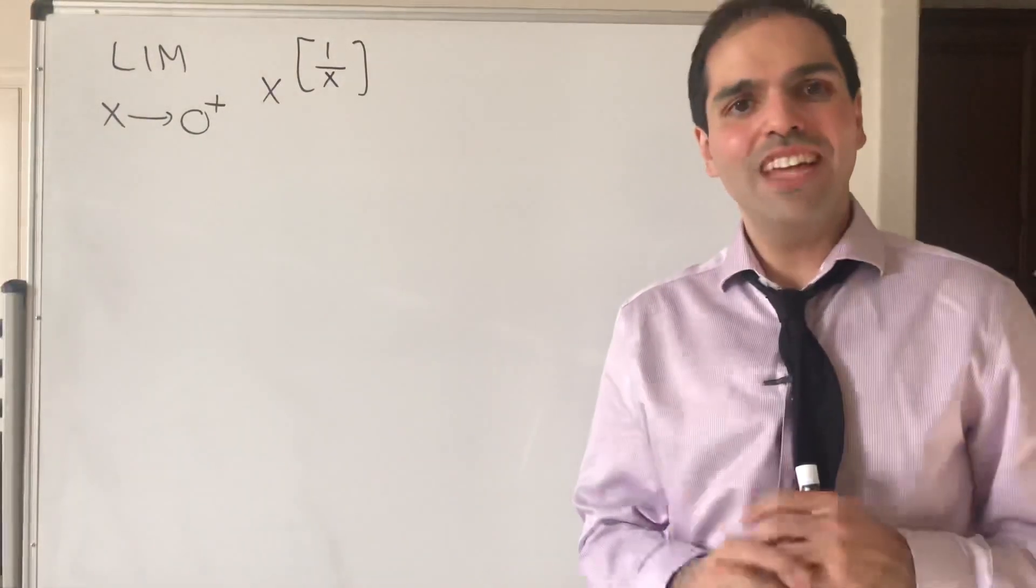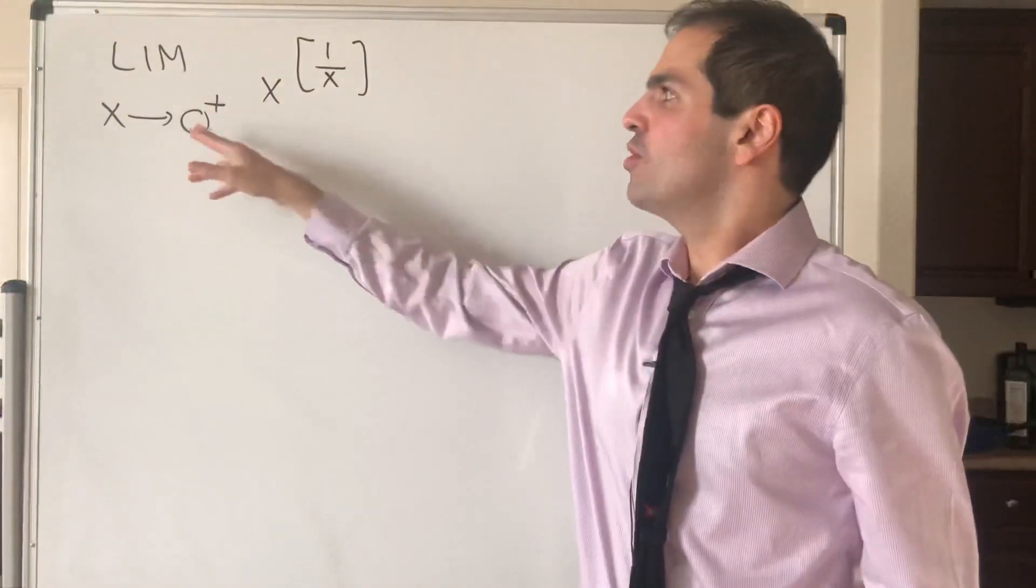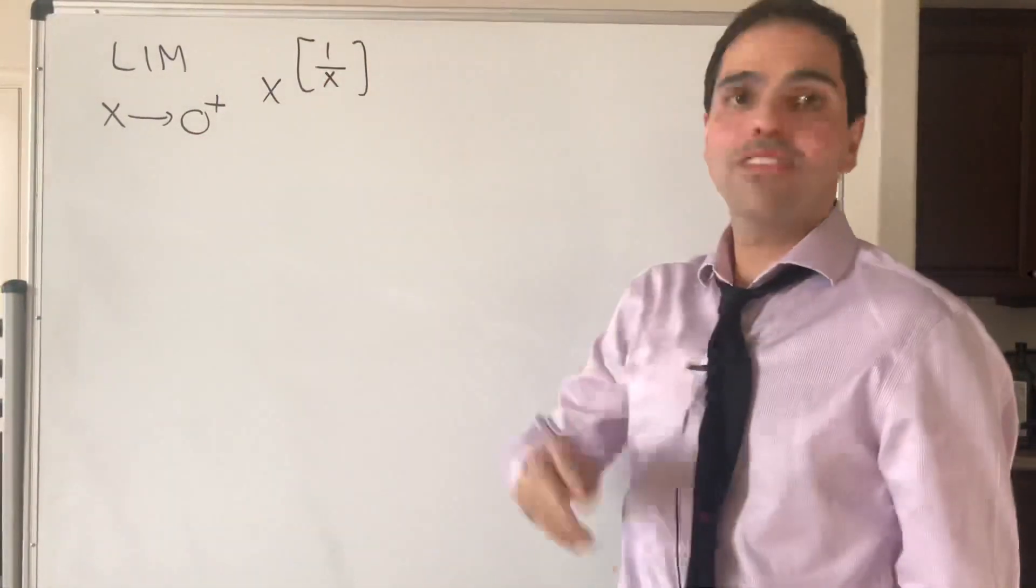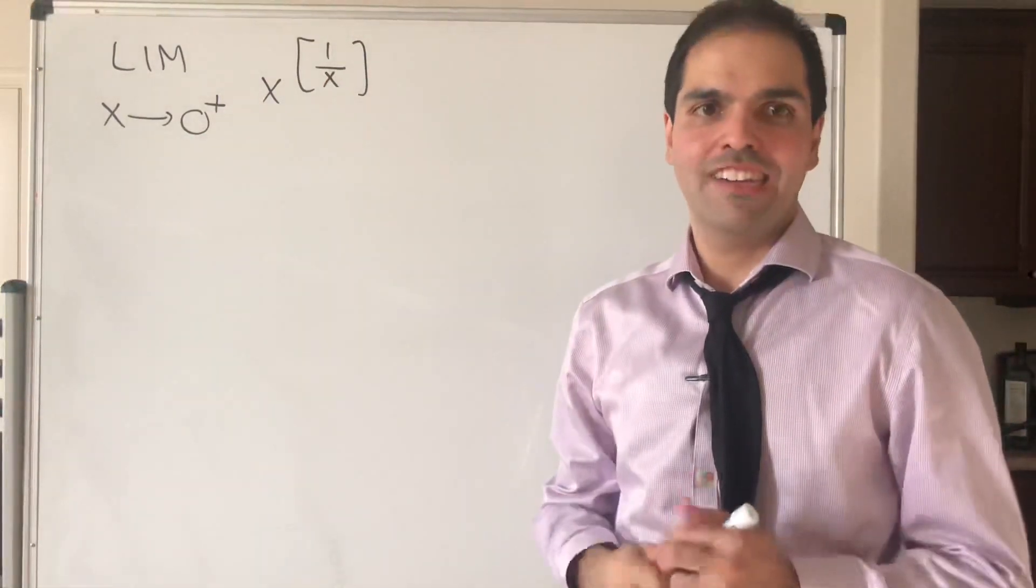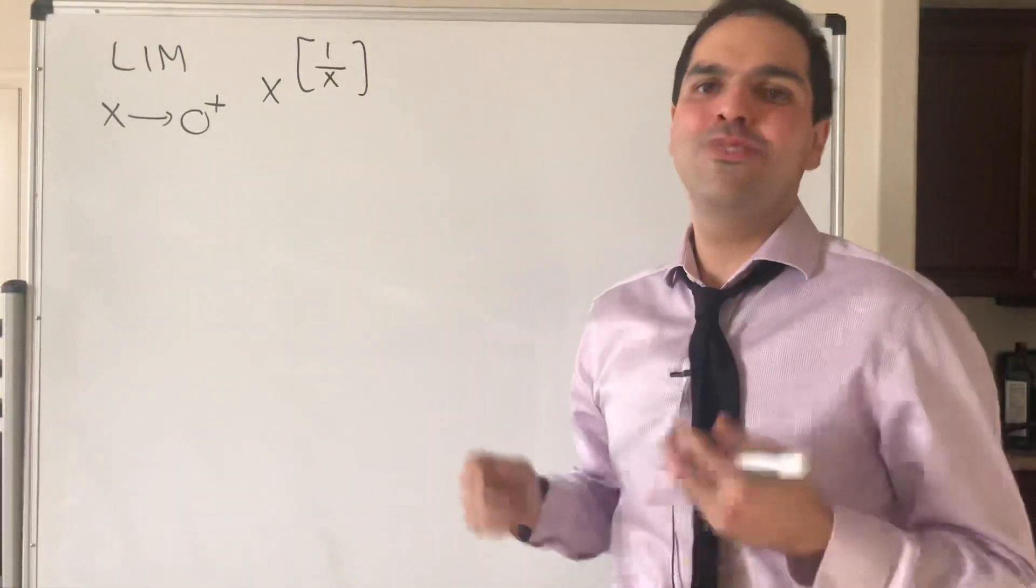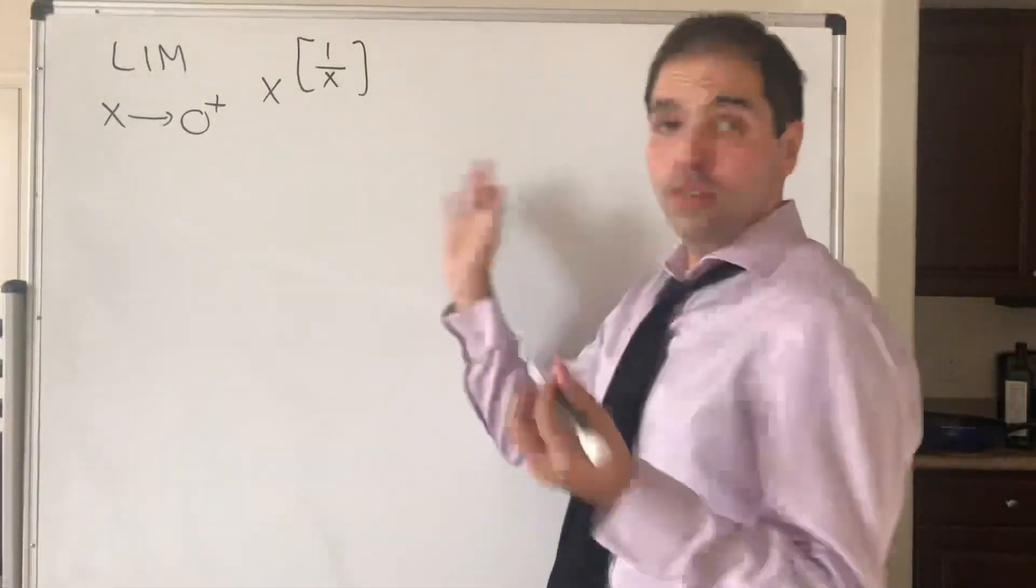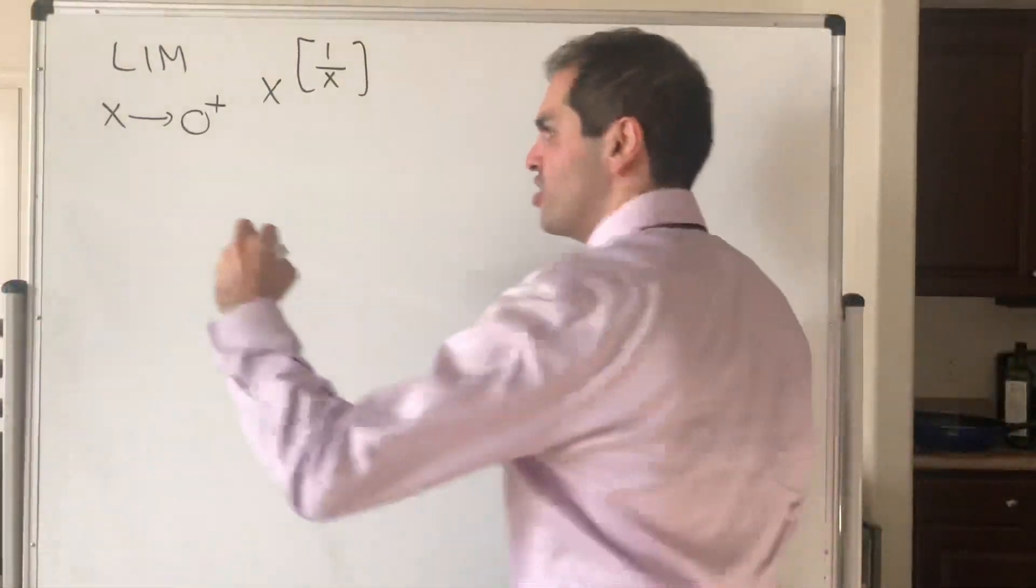All right, thanks for watching. Today I want to calculate a neat limit, namely the limit as x goes to 0 plus of x to the floor of 1 over x. And I bet after watching this video, you'll all be to the floor of 1 over x. You'll see it's not such a bad problem, actually.